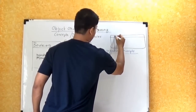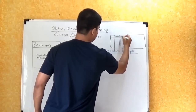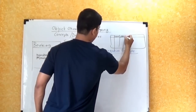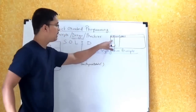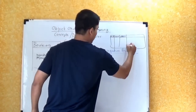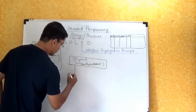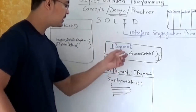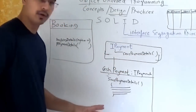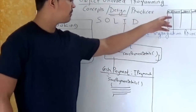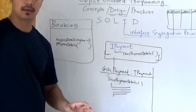The database has fields like MemberID, Name, Address, and Amount. The CashPayment class will implement this IPayment interface using the SavePaymentDetails method, where it will store the MemberID, Name, Address, and Amount.